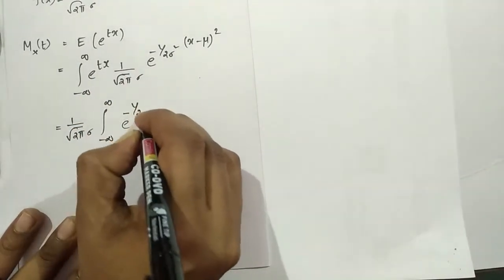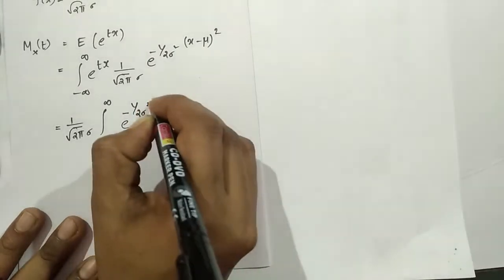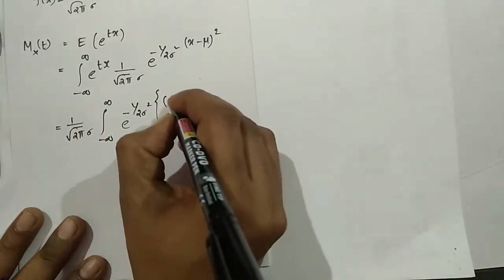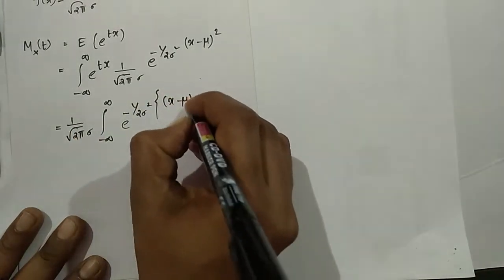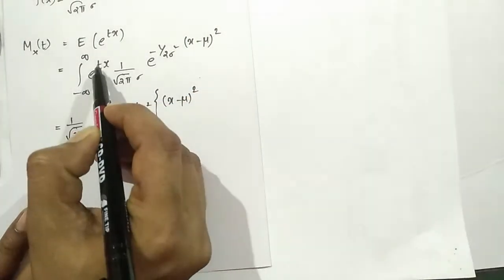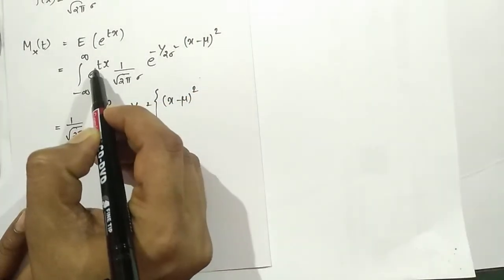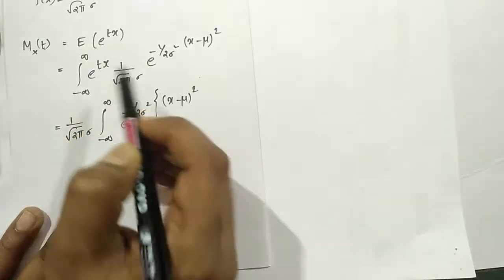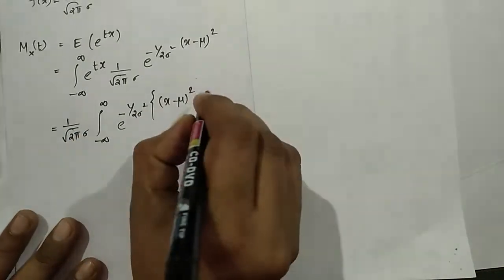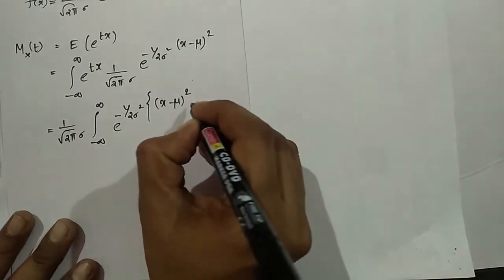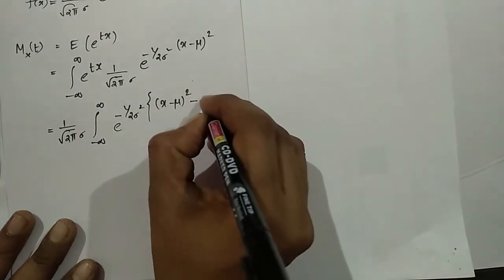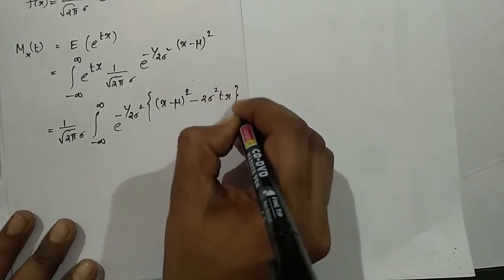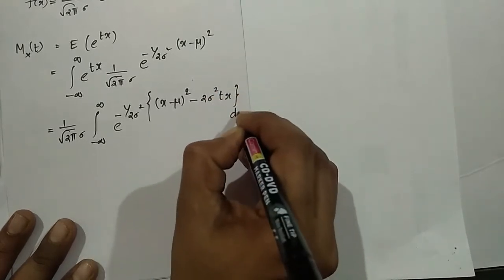We have e raised to tx, then we add minus 1 by 2 sigma squared times (x minus mu) squared in the exponent, combining the terms: minus 1 by 2 sigma squared times (x minus mu) squared, giving us a combined exponent expression inside the integral dx.